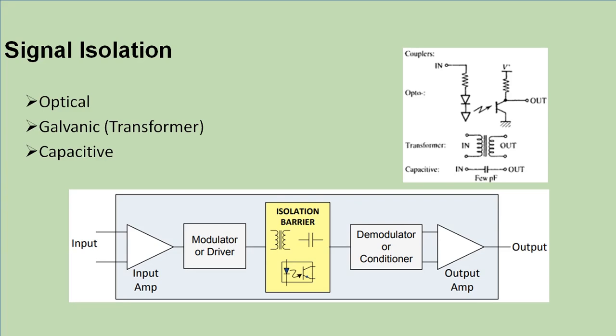Signal isolation is achieved by optical means, transformer, or capacitor. In optical means, the signal is converted to light and then detected by an opto-transistor or opto-diode. In transformer isolation, it is achieved by electromagnetic induction with no direct conduction of current. In capacitor means, signal isolation is achieved by electrostatic field.